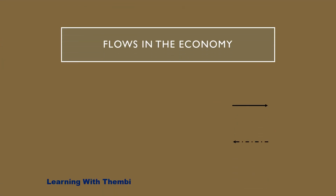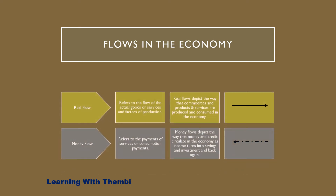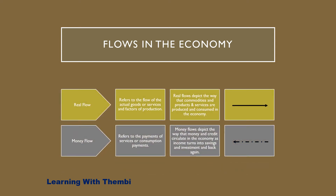Taking it from the circular flow we did in our previous lesson, we have noted that we have two kinds of flows in the economy: the money flow and the real flow. The real flow refers to the flow of actual goods or services and factors of production from one participant to another, whereas money flow refers to the income and spending by the participants of the economy. So real flow and money flow move in opposite directions.